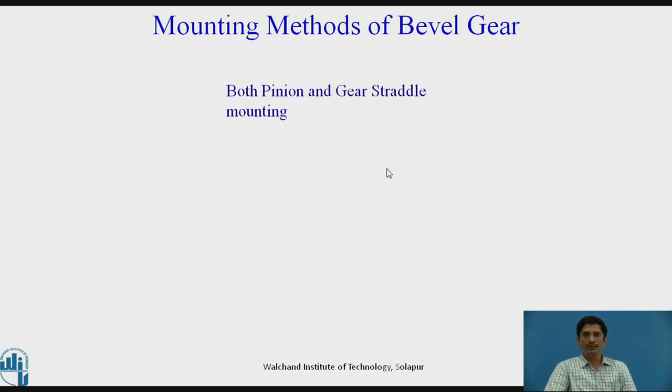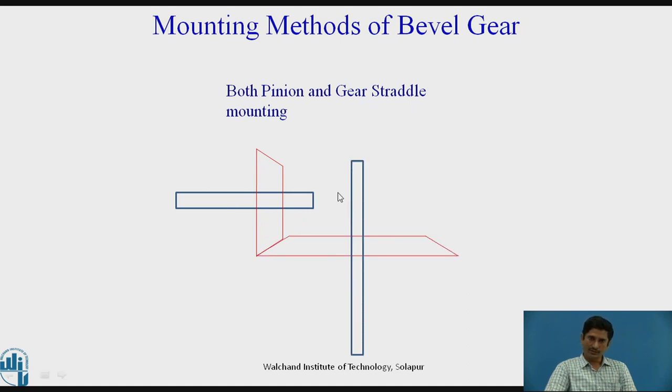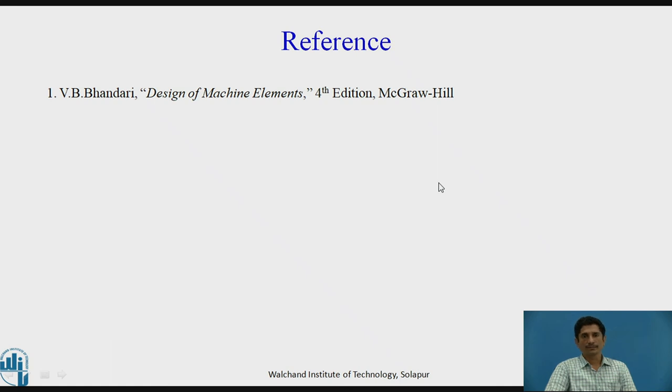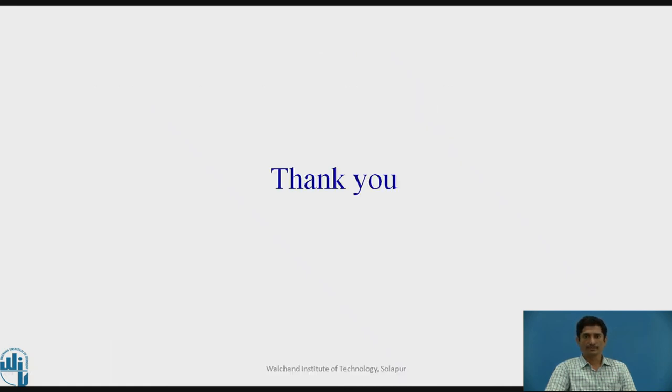Third method is both pinion and straddle for gear also. Shaft of pinion, shaft of gear. First two bearings represent overhang mounting of both. Now, this represents straddle mounting of pinion. And another bearing is used on the shaft of the gear so that gear shaft is also mounted as straddle. There is very least chance or no chance to bend the shaft. Thank you.